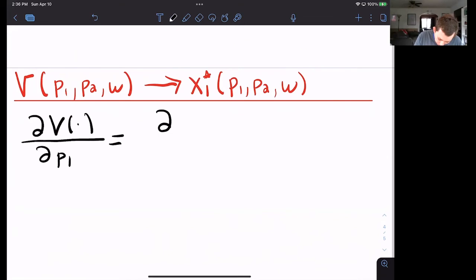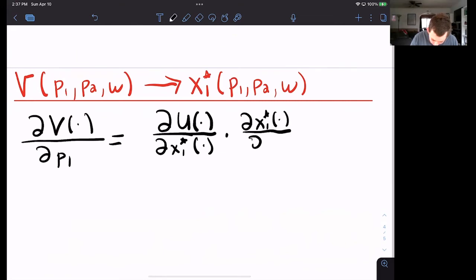Well, that depends on how our utility changes with respect to x1 star. Now what I'm going to do is I'm going to go open bracket, and then just a little dot, because I don't want to write p1, p2, w every time. So I'm just going to use this notation. And that's multiplied by how our Marshallian demand for good one changes with respect to p1.